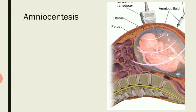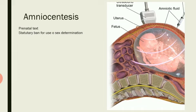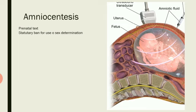Amniocentesis is a prenatal test performed before birth. It can determine the sex of the fetus and detect chromosomal or genetic disorders. However, this test was banned for sex determination purposes, because people began misusing it to identify the sex of the fetus, increasing the rate of female feticide.